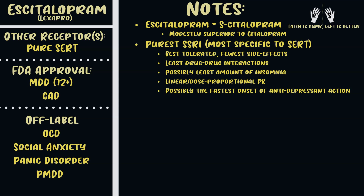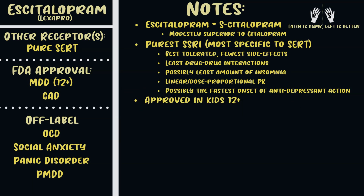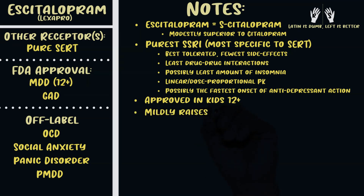These medications interact differently with everyone, so some patients will have wildly different experiences. Lexapro and Zoloft are probably the first-line SSRIs overall. Lexapro is approved in kids 12 and older — only Lexapro and Prozac are approved for children, with Prozac approved for kids eight and older. The 'prams' — citalopram and escitalopram — are known to mildly raise the QTc, and they're typically preferred for the medically ill and elderly because of the least amount of drug interactions.